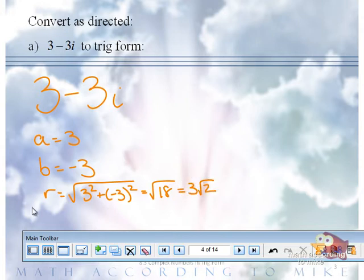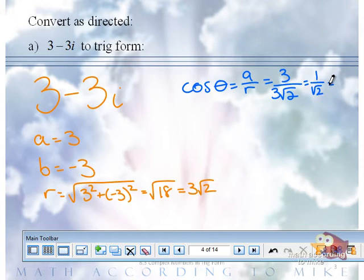So according to our formulas, the cosine of theta is A over R. Our A is 3, our R is 3 radical 2. Both of the 3s are outside, so they can play together. What happens to them? They cancel, so you get 1 over the square root of 2. 1 over the square root of 2 can be rewritten as radical 2 over 2.